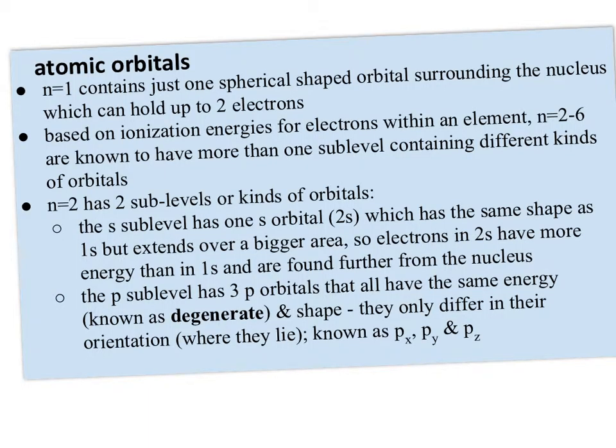So what are atomic orbitals? Well, again, they're this three-dimensional shape, that's arrived at from using Schrodinger's equation. And in energy level 1, there's just one spherical-shaped orbital surrounding the nucleus, which can hold up to two electrons, and it's cleverly called the 1s orbital. Based on ionization energies for electrons, our energy levels 2 through 6 are known to have more than one sublevel and contain different kinds of orbitals.